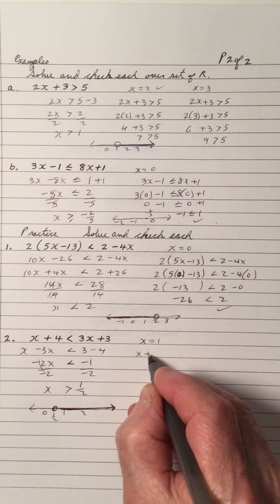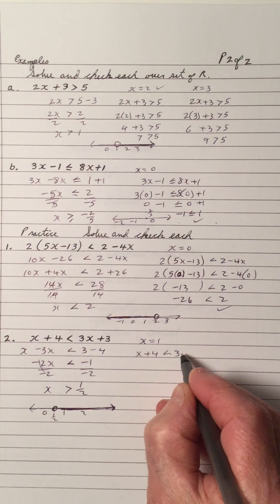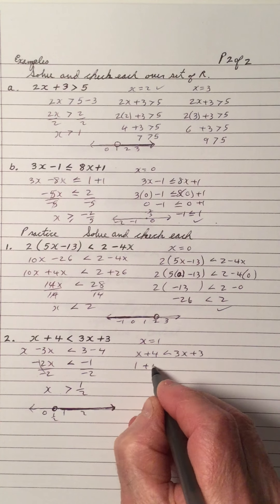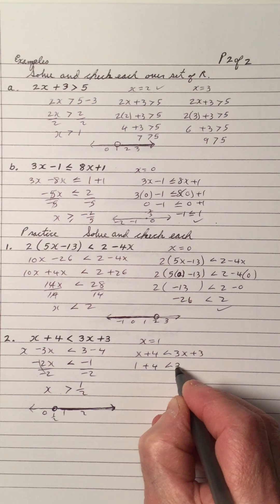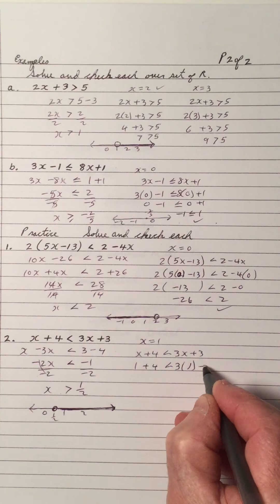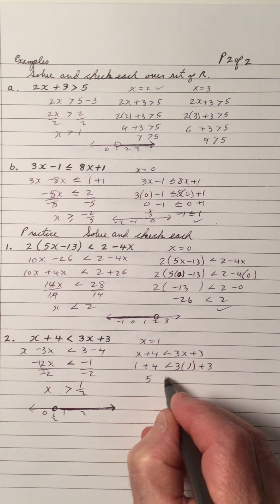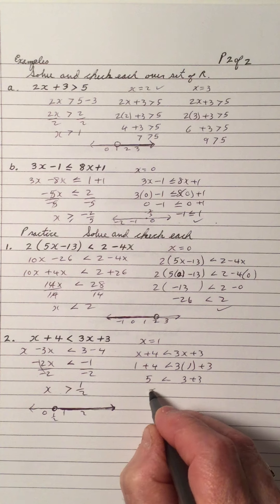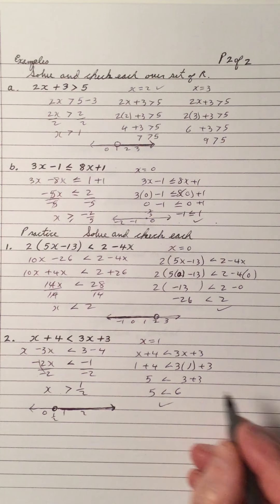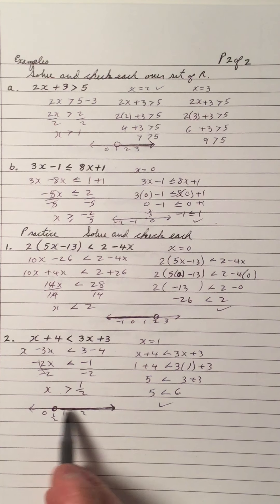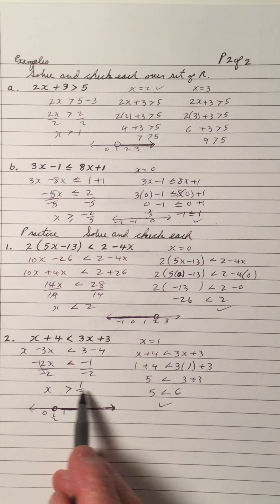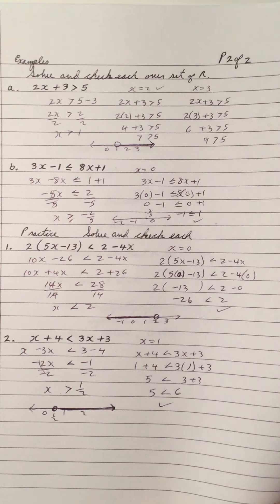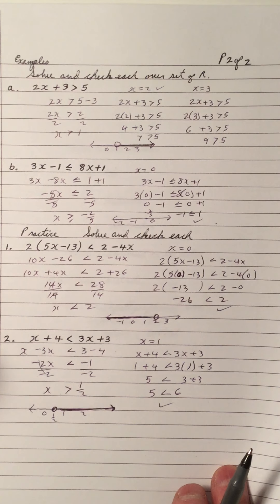So write down the original inequality. Here's the original inequality. Sub in 1 in the place of x. That's a 5. And that's a 3 plus 3. 5 is less than 6. That's true. So it looks like we're taking the numbers that are greater than a half. And that's solving an inequality.